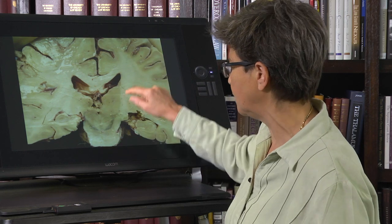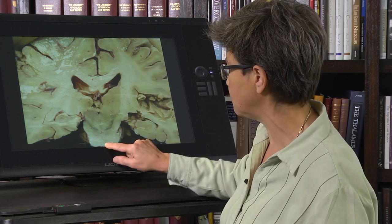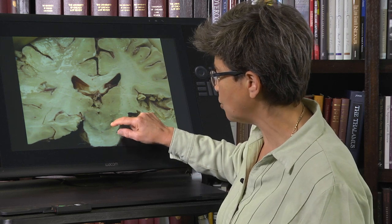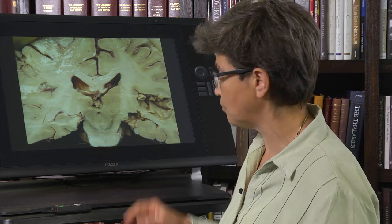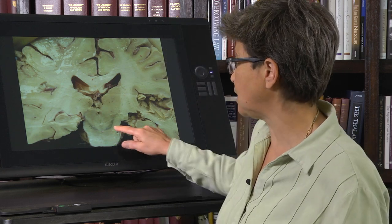This is obliquely cut. You can see the internal capsule coming into the cerebral peduncles, and here's the pons. This dark stuff right here is the substantia nigra. There's a substantia nigra on either side.